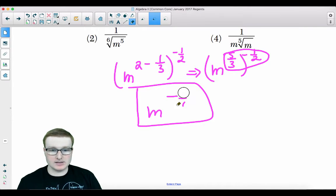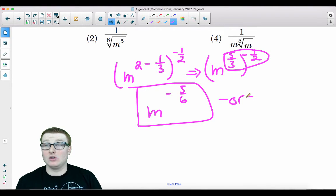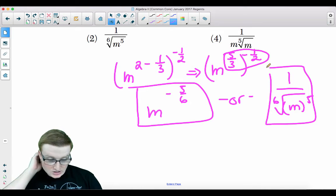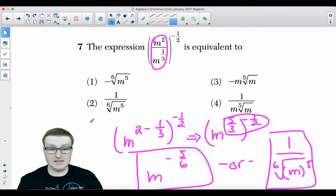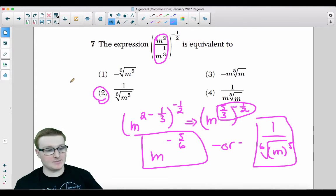That's one answer. Or as a radical with a positive exponent, it has to be one over the sixth root of m raised to the fifth power. That could also be an answer. Is that answer there somewhere? Yes, it is. Your answer is choice two. That's how you do that question. Either one of those answers would be acceptable.